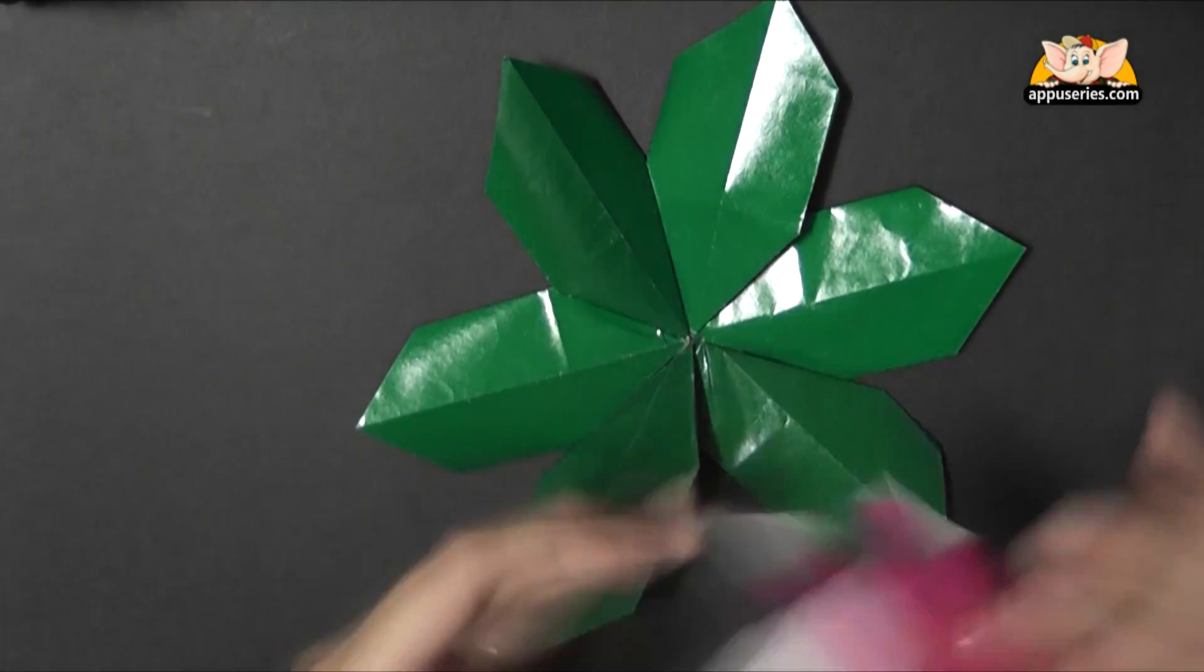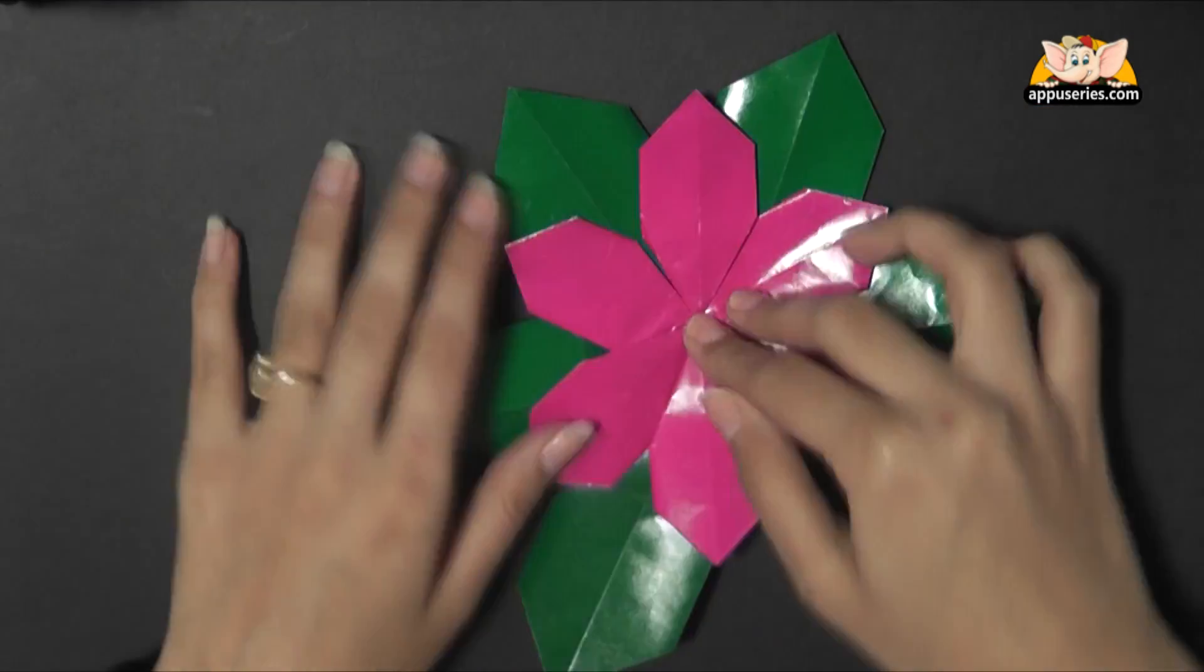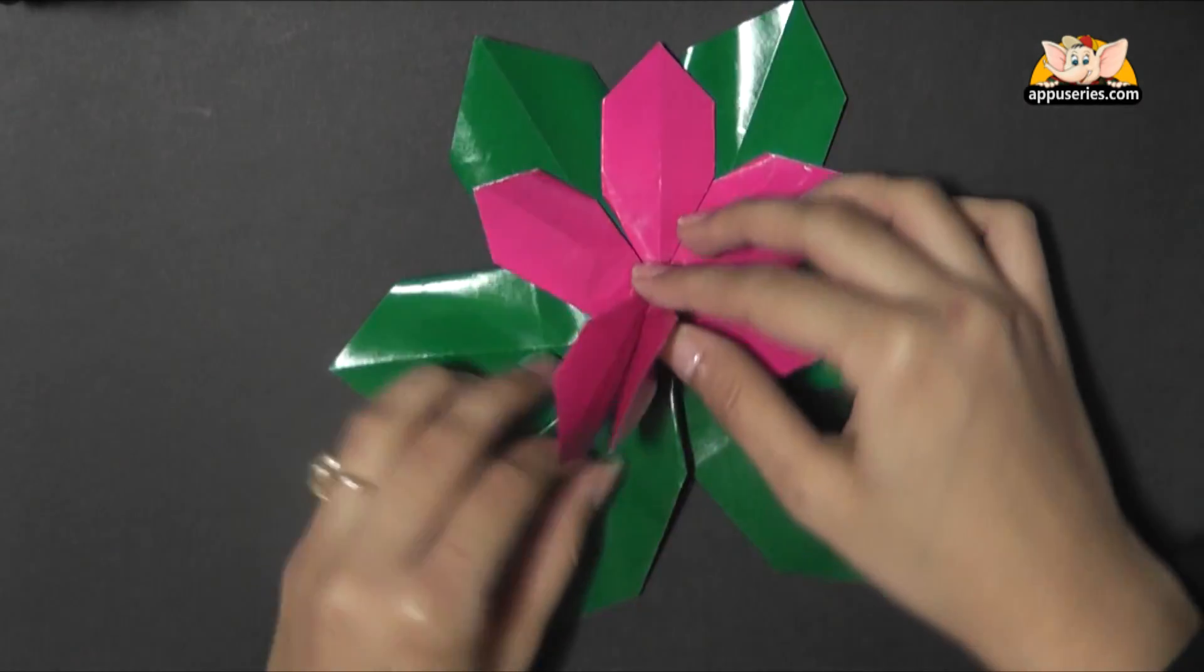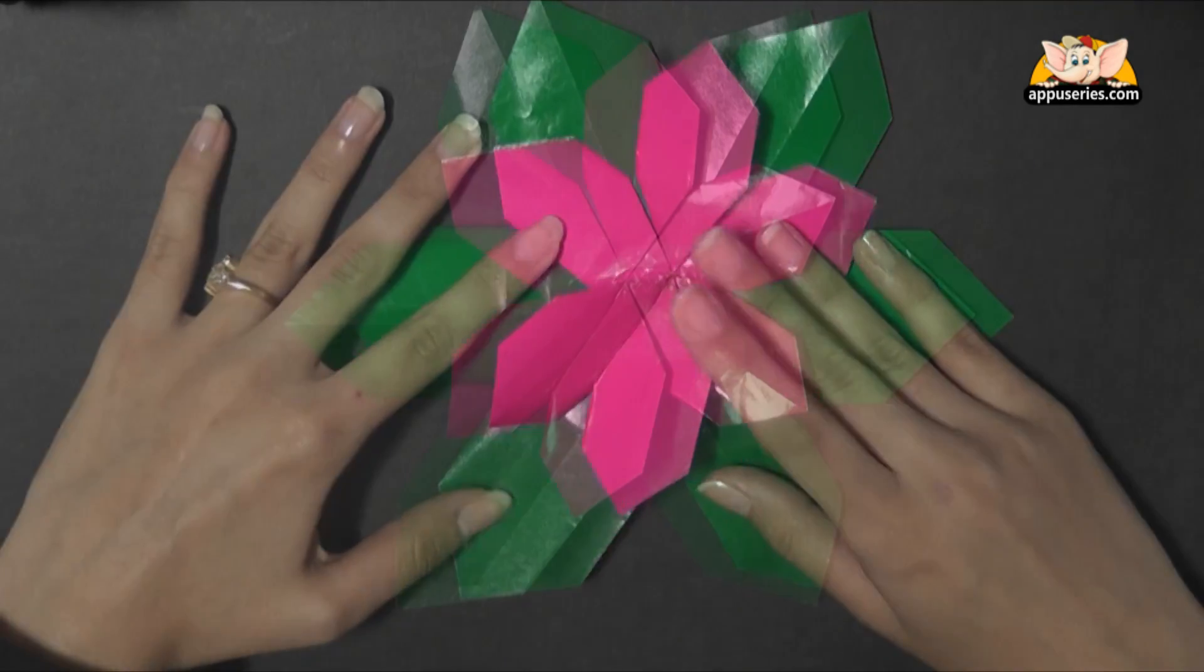I will take a little more tape. Set my flower the way I like it. Now I am going to paste it right at the center. And here you have your lovely flower ready. And a tiny one.